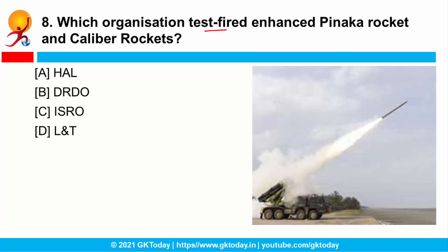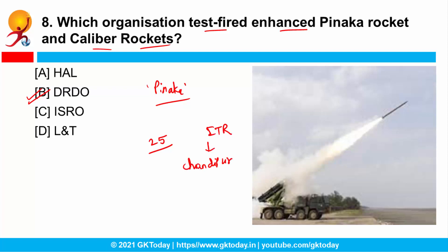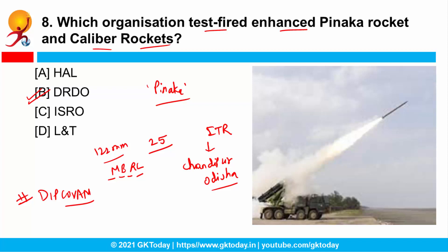Question number 8: which organization test-fired the enhanced Pinaka rocket and caliber rockets? DRDO — the Defence Research and Development Organisation — successfully test-fired an extended range version of the indigenously developed Pinaka rocket. Twenty-five enhanced Pinaka rockets were test-fired at the Integrated Test Range in Chandipur off the coast of Odisha. The 122 mm caliber rockets were launched from MBRL — the multi-barrel rocket launcher. DRDO has also approved DIPCO VAN, a COVID-19 antibody detection kit used for sero-surveillance to detect COVID antibodies in the population.